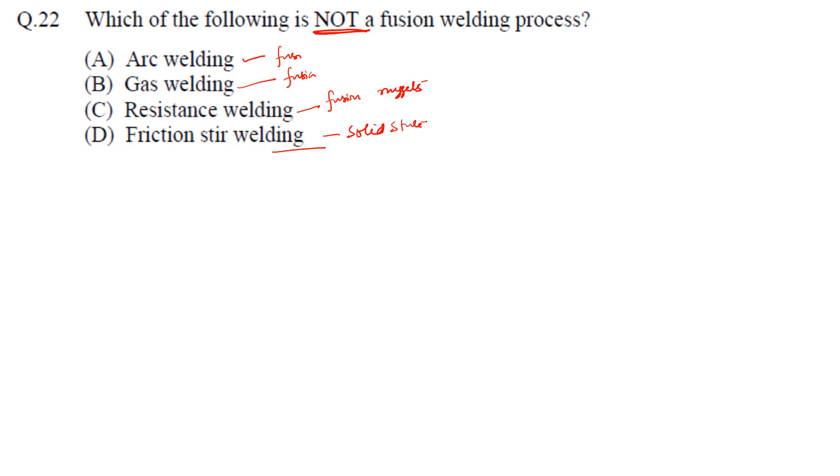Next is friction stir welding. Friction stir welding is a solid state process. In friction stir welding, suppose we want to weld these two pieces, we introduce some kind of arrangement which rotates. Because of its kinetic motion it creates heat and this heat makes the material solid very plastic. Once it becomes very plastic, this plastic nature leads to joining of the metal.